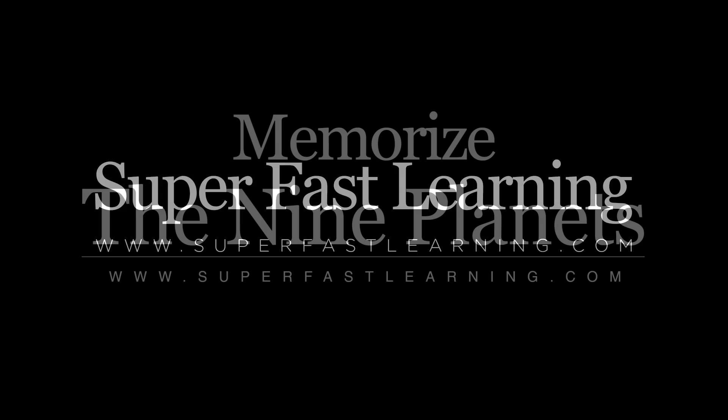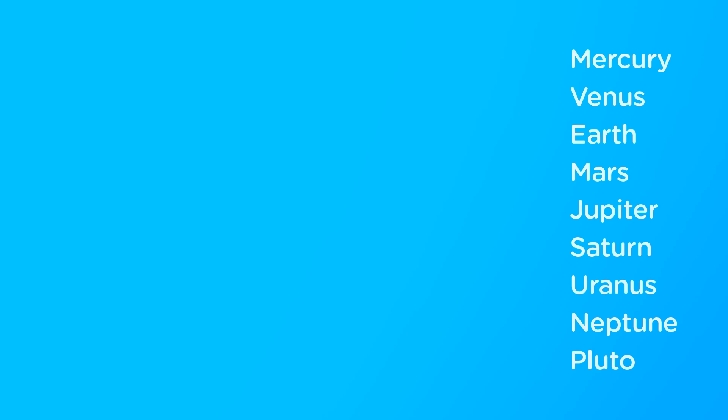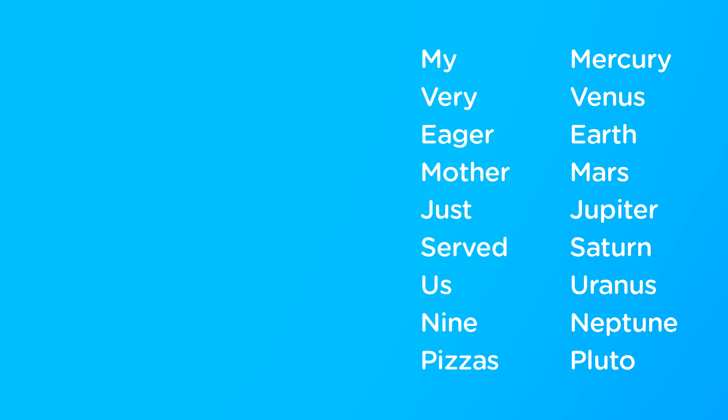How to memorize the order of the planets from the Sun. To memorize the order of the planets from the Sun, simply memorize one of these sentences: My very eager mother just served us nine pizzas.